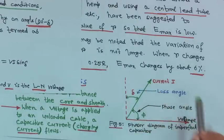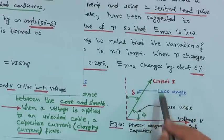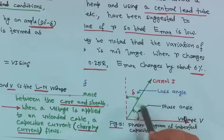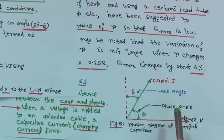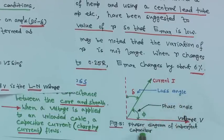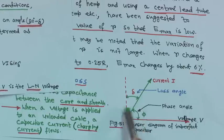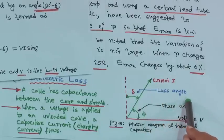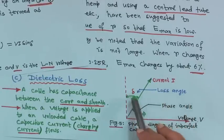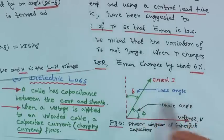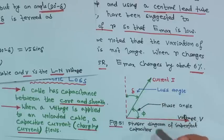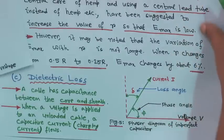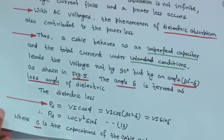The angle δ is termed the loss angle of the dielectric — shown in figure 5. The current leads the voltage by φ, and δ = 90° − φ. In a perfect capacitor, current would lead voltage by exactly 90°, but due to dielectric losses, δ is nonzero. This is the phasor diagram of an imperfect capacitor.